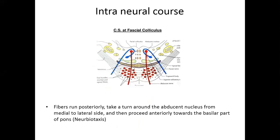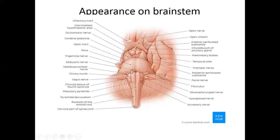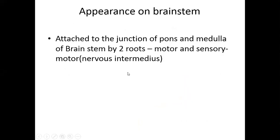Intraneural course: the fibers after their origin go posteriorly, take a turn around the abducent nucleus, then go laterally and anteriorly, coming out through the basal part of the pons and medulla. The facial nerve appears on the brainstem at the junction of pons and medulla. It appears as two roots — not a single nerve — one motor and one sensory. The sensory root is also called nervous intermedius, and it is sensory as well as motor to the glands.